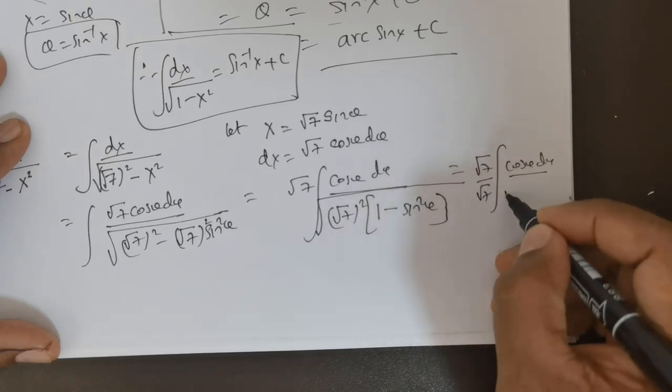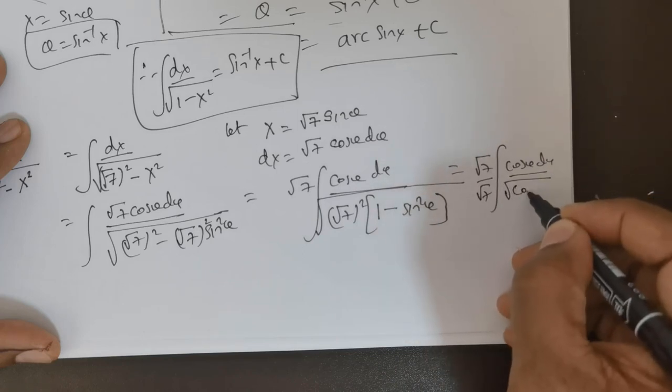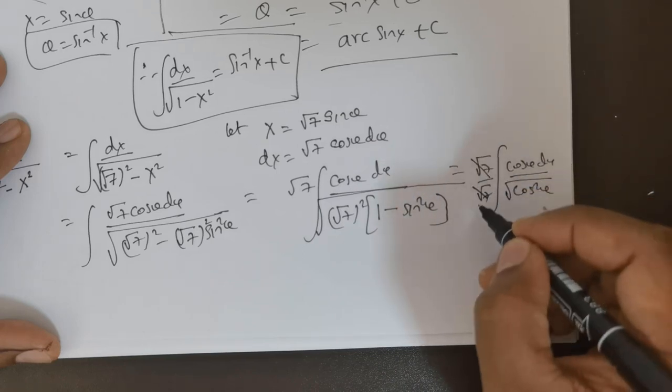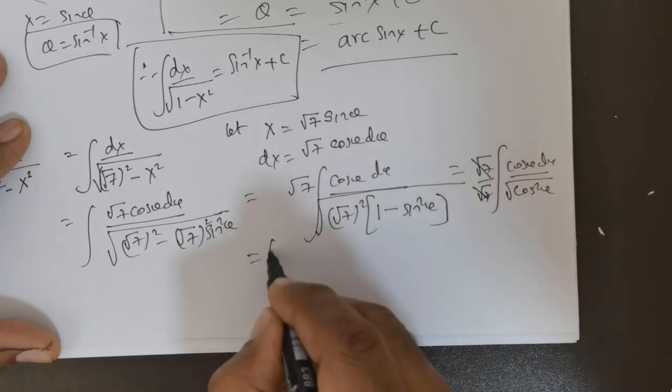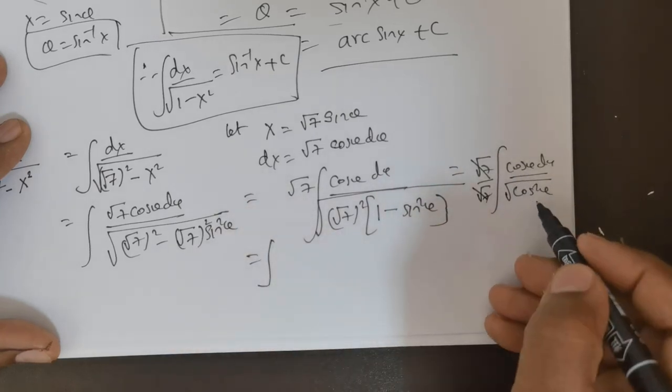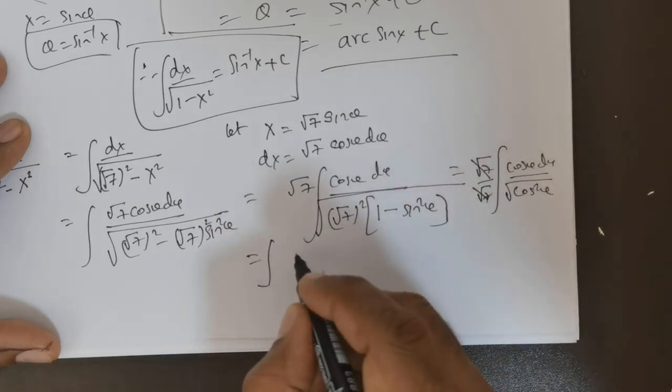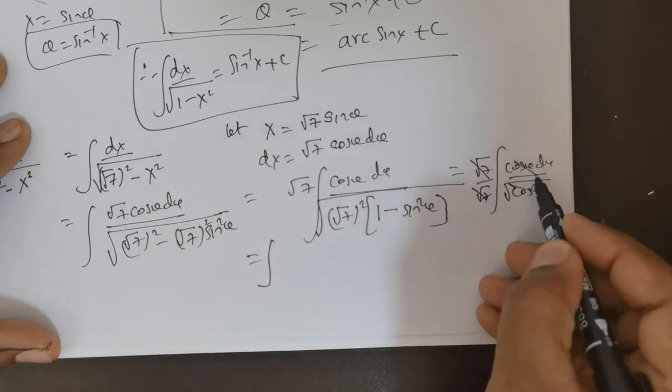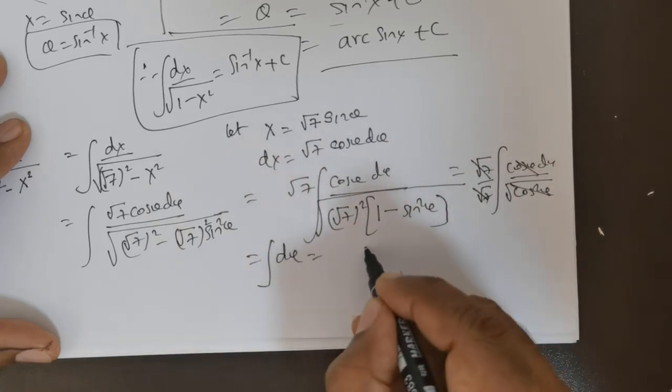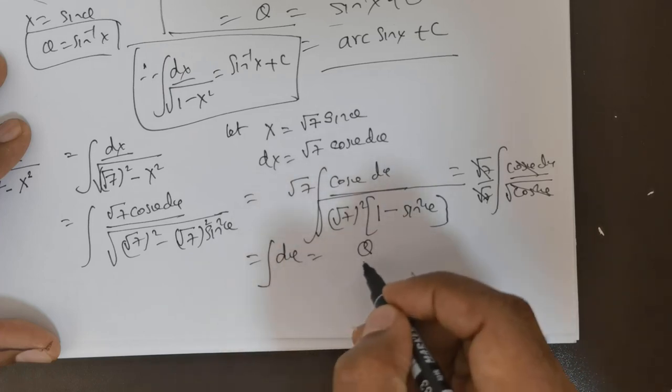This times the square root of 1 minus sin squared theta, which is nothing but cos squared theta. So root 7 will be cancelled, giving you the integral of cos theta divided by the square root of cos squared theta. That cancels, giving you d theta, and the integration of d theta is theta.